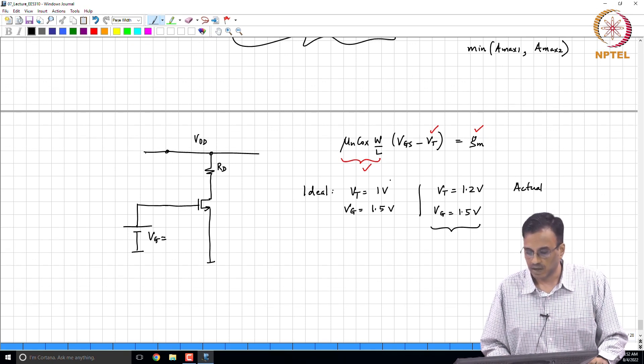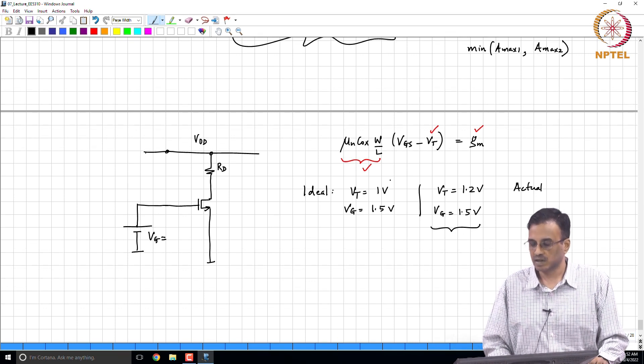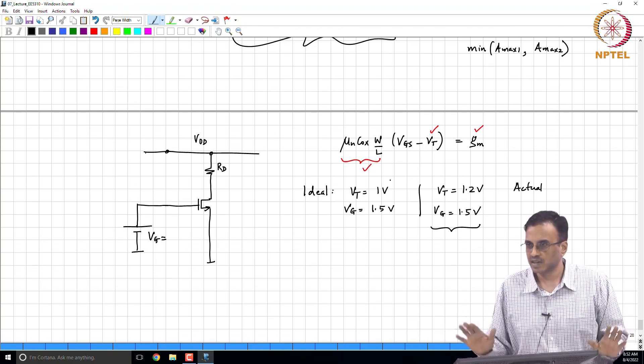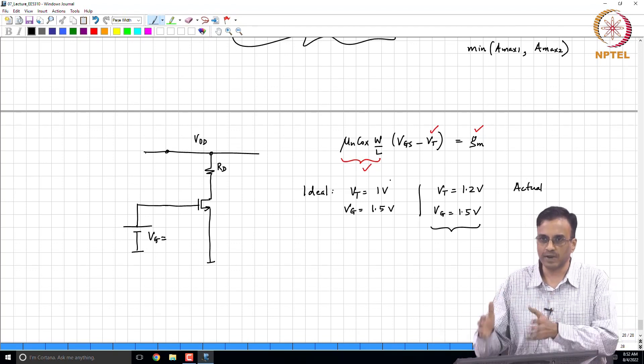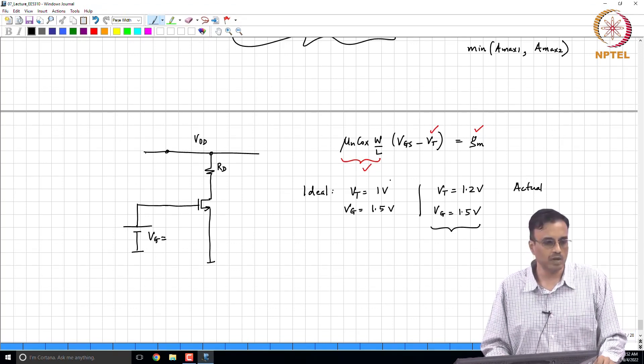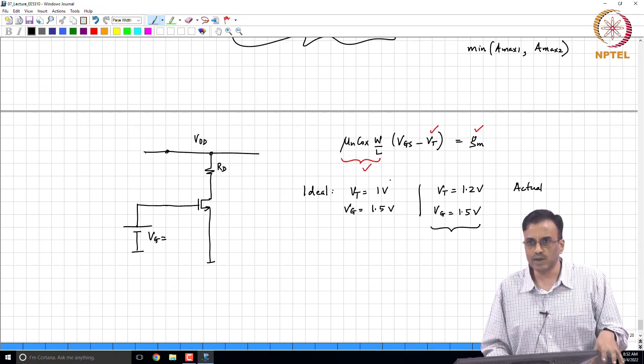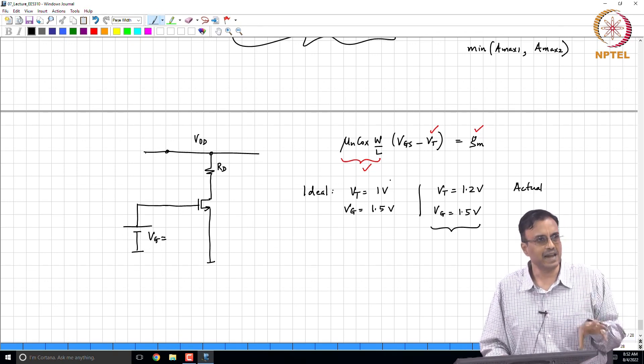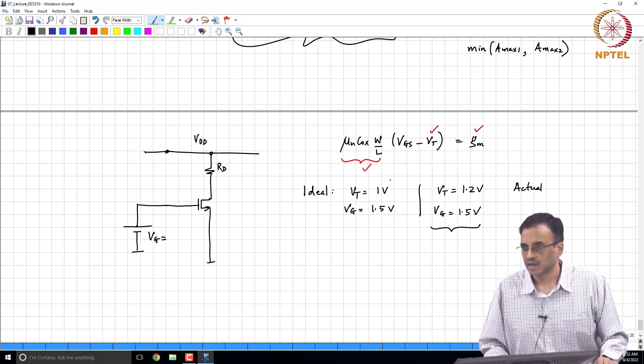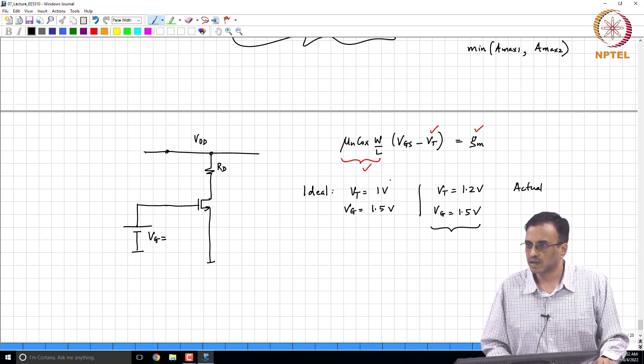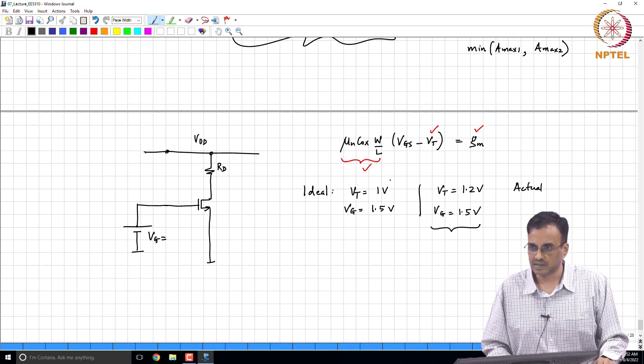The saying that the threshold voltage variation should not be this large is not an option, because when you manufacture something, there will always be variations. So what we ought to do therefore is figure out a way in which one can change that bias voltage in a way that depends on the actual threshold voltage of the transistor.